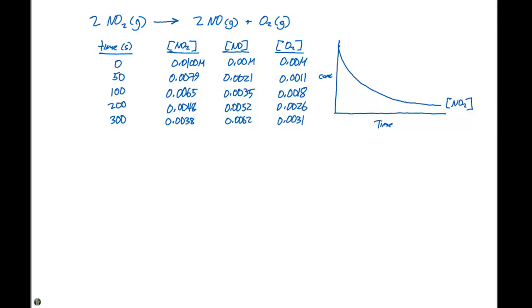If we were gonna represent what happens with the concentration of NO, we see that we start with 0.00 molar, and we progress to 0.0062 molar. So we're gonna start down here at zero, and this concentration is gonna increase as we proceed with time. So this will be the concentration here of the nitrogen monoxide.